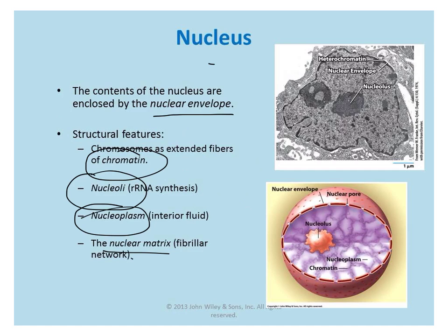This happens to be a HeLa cell and its nucleus. You can see heterochromatin, which is more darkly dense DNA usually found near the envelope, and more loosely packed DNA called euchromatin. That's the distinction between heterochromatin and euchromatin.